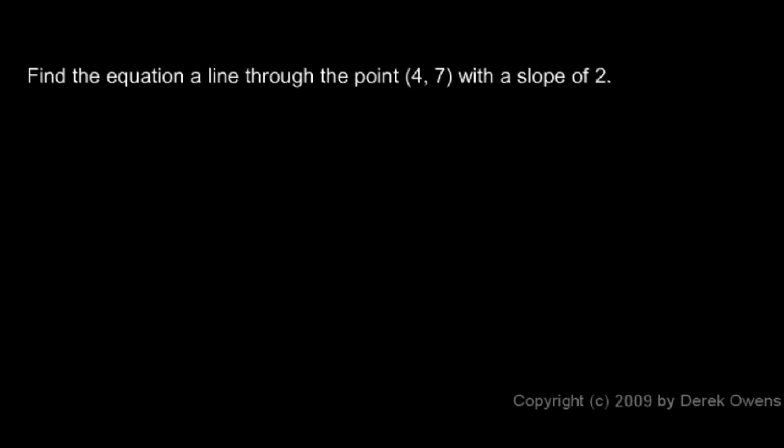In this example, we're told to find the equation of a line through the point 4, 7 with a slope of 2. And we will use the point-slope form of the equation for a line. So we write y minus y1 is equal to m times x minus x1.